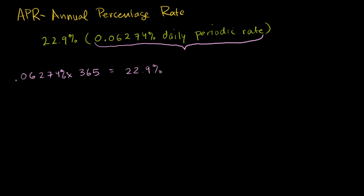So let me just write that as a decimal. So 0.06274% as a decimal, this is the same thing as 0.0006274. 1% is 0.01, so 0.06% is 0.0006 as a decimal.